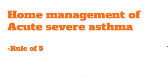For managing acute severe asthma at home, we use the Rule of Five. The patient should sit in a comfortable upright position and be given five puffs of bronchodilator inhaler with a large-volume spacer — because the patient is dyspneic and cannot use the inhaler correctly without a spacer. The five puffs are repeated at five-minute intervals, up to five times within one hour. If there is no improvement after this therapy, the patient must be taken to a nearby hospital.